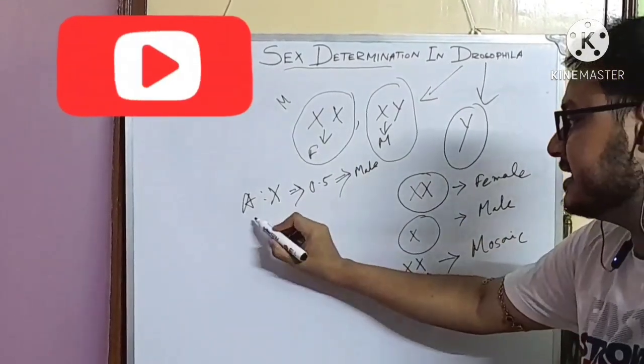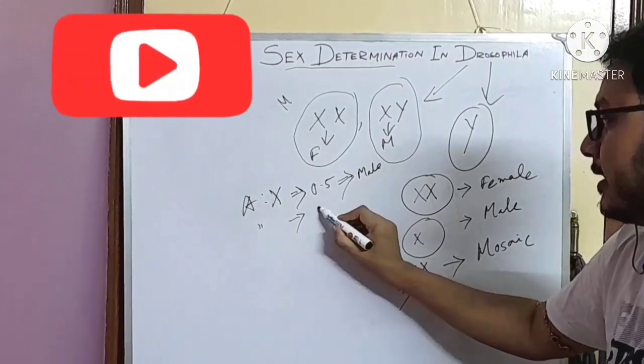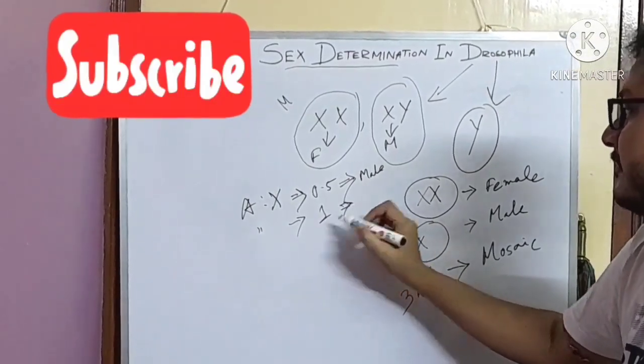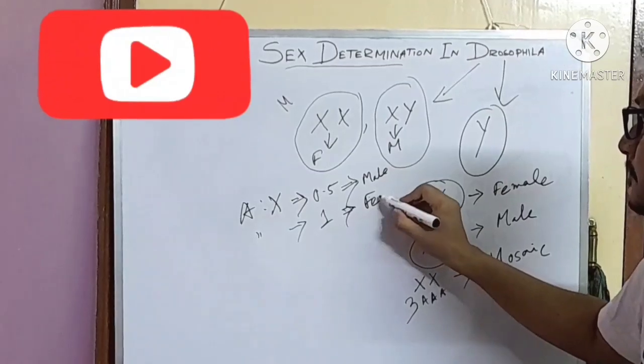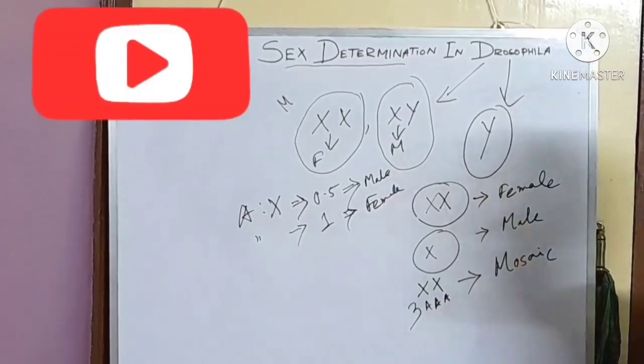And if this ratio is 1, then the fly will be female.